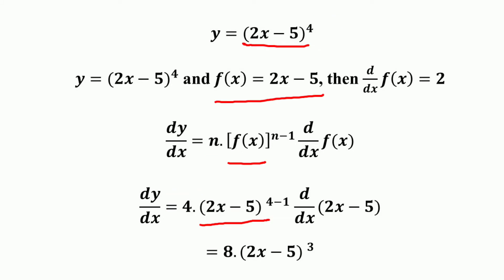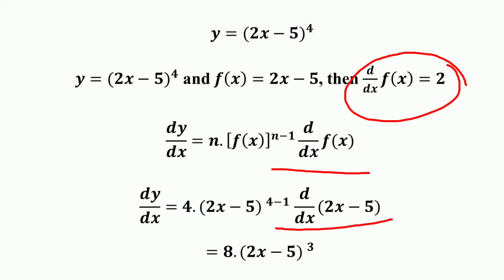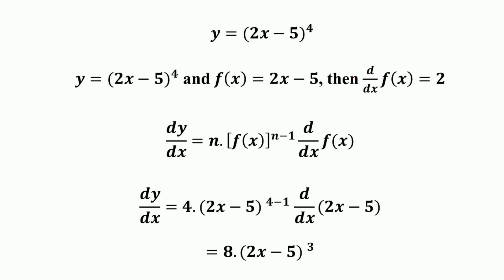So: 4 times f(x), that is (2x minus 5), raised to the power n minus 1 — that is 4 minus 1 — multiplied by the derivative d/dx of f(x), that is the derivative of (2x minus 5), which equals 2.